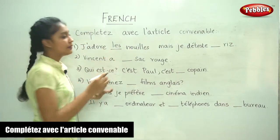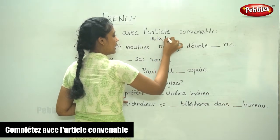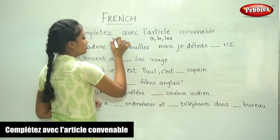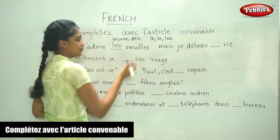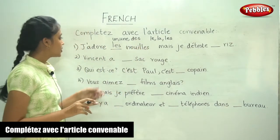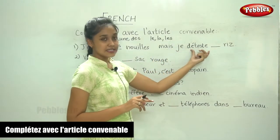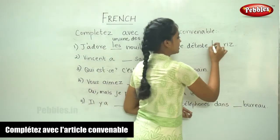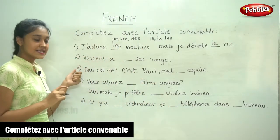If you remember, the definite articles are le, la, and les, and the indefinite articles are un, une, and des. So these are the six articles in French. 'J'adore les nuits mais je déteste...' So the noun here is masculine, so it is 'le'.